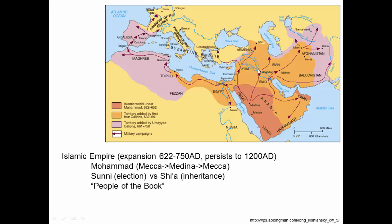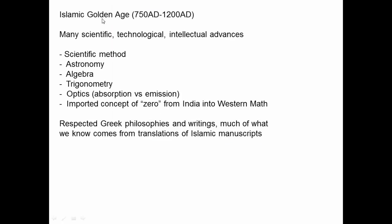The Islamic Empire spread the same way of thinking across its region. They got along with Christians and Jews — considered 'people of the book.' During this period we have the Islamic Golden Age, when the Middle East was fairly organized and peaceful, producing many scientific, technological, and intellectual advances. This is one of the first real uses of the scientific method. Early Muslims advanced astronomy, and algebra — an Arabic word — and trigonometry, with Arabic roots, were highly developed during this golden age.